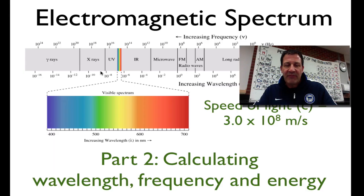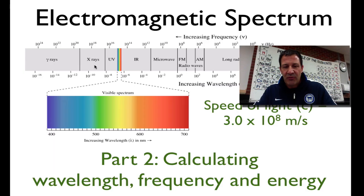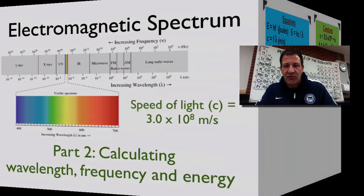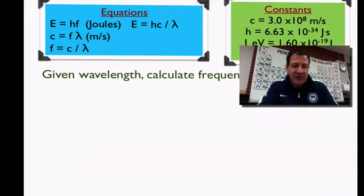In part one, I gave a brief overview of the electromagnetic spectrum, its parts, some examples, and then also a brief overview qualitatively of what wavelength, frequency, and energy are in terms of the electromagnetic spectrum. In this video, we're going to do some calculations.